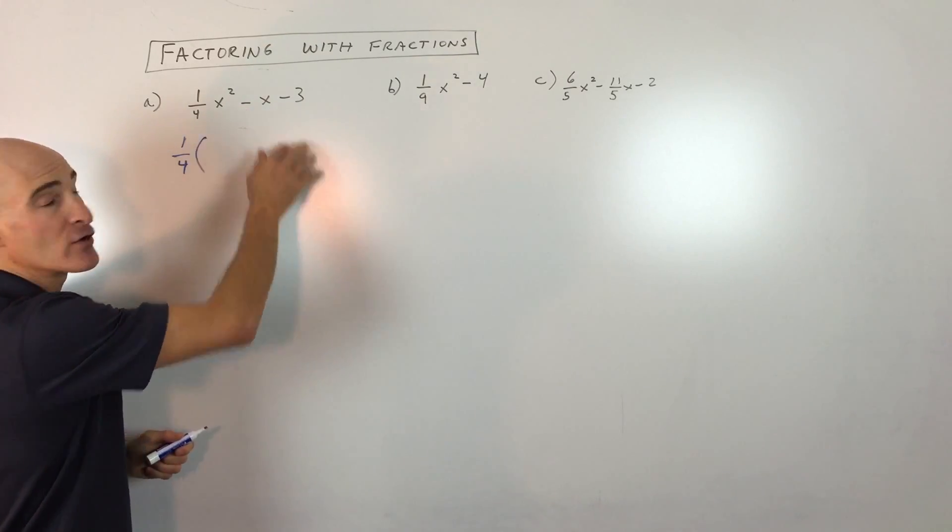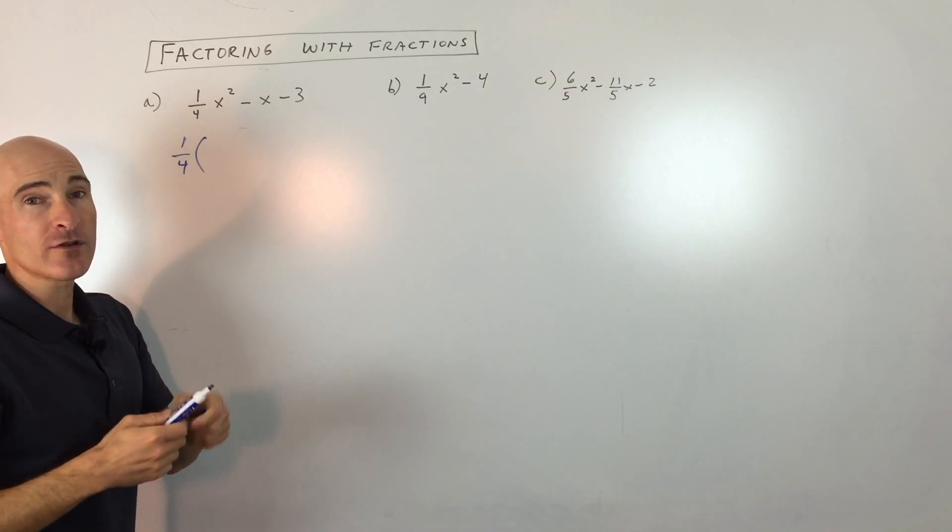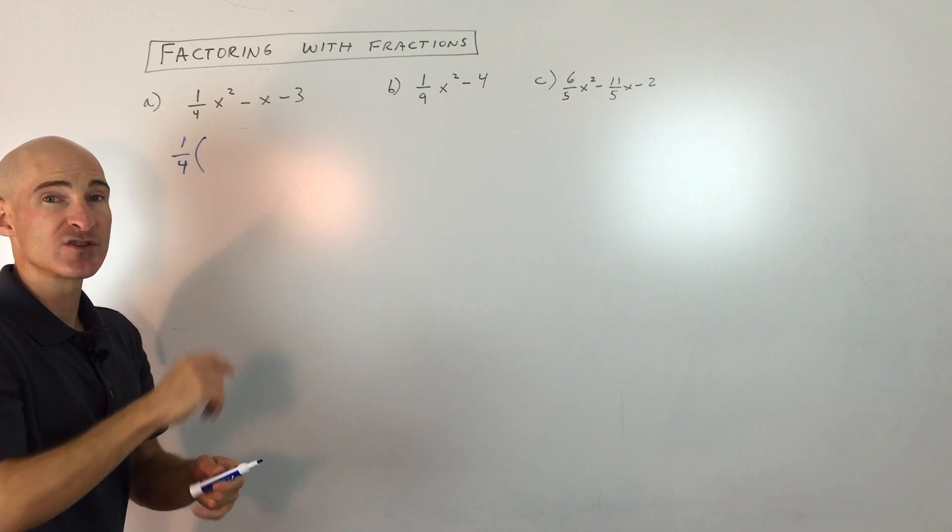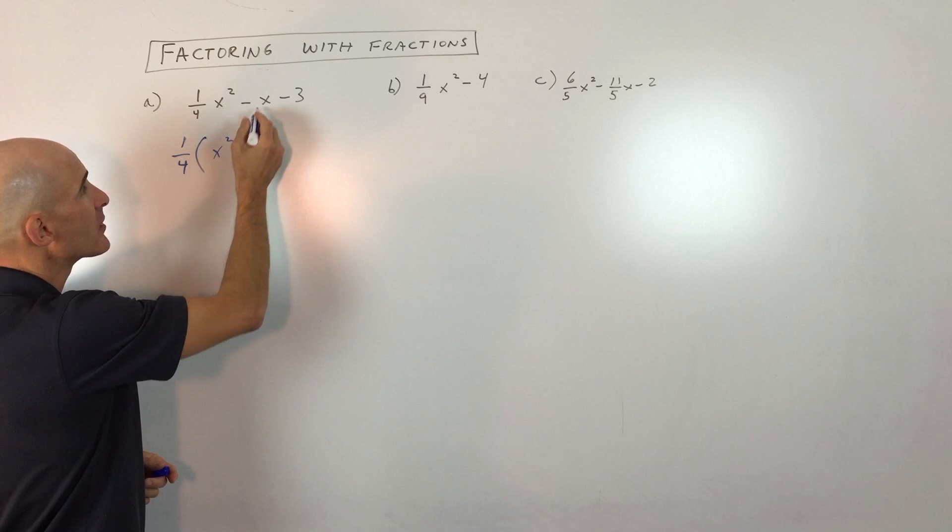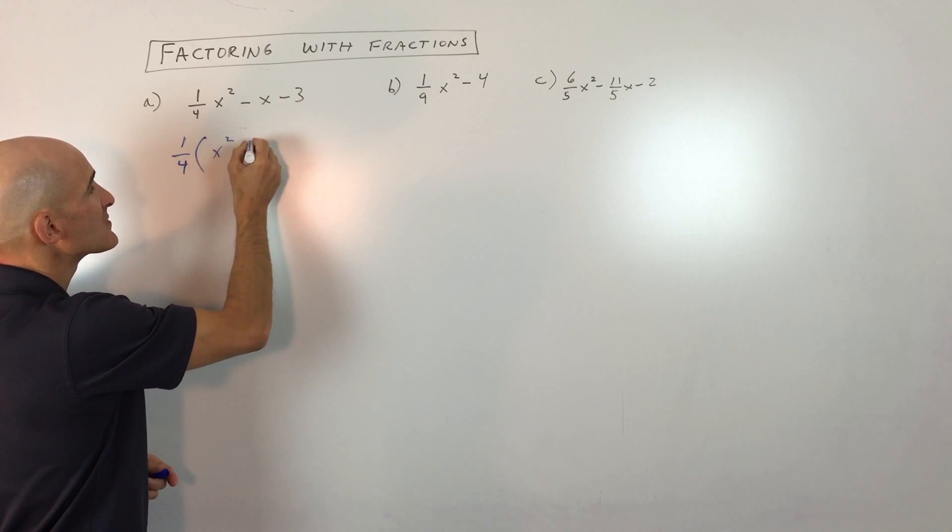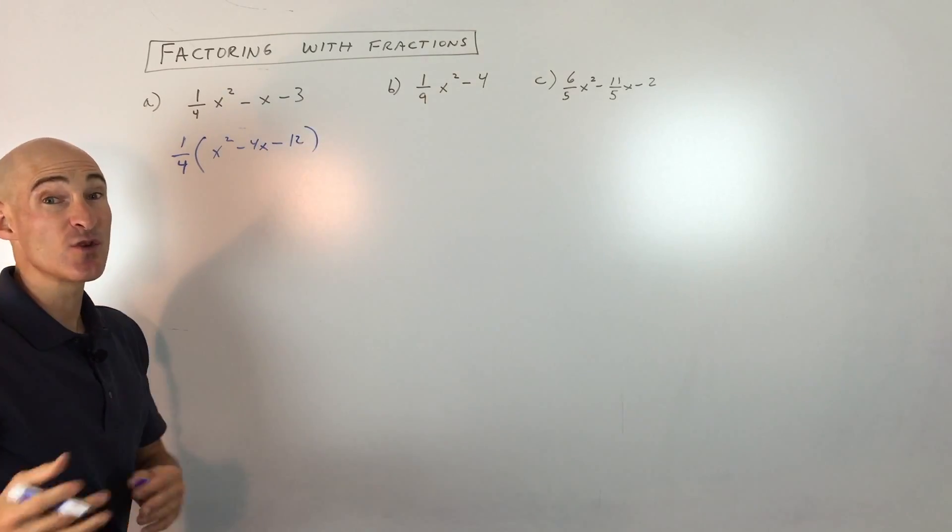We don't want to change the overall value of this expression. So if we're dividing out one-fourth, we have to multiply by the reciprocal, which is to multiply by four. So four times one-fourth, of course, is one. That gives us x squared. Minus one times four gives us negative four x. And then negative three times four is negative 12. So are you with me so far?